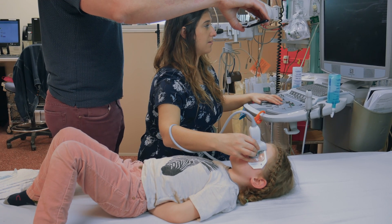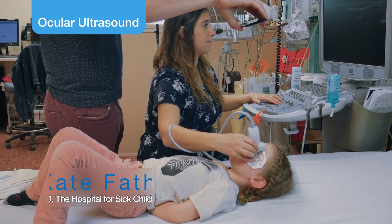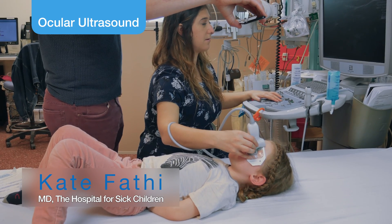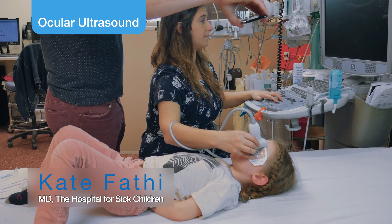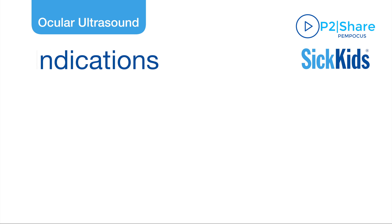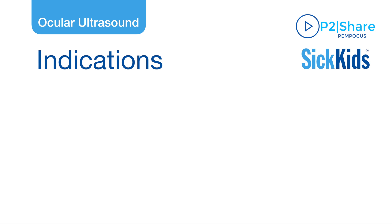This video will discuss an approach to performing a point-of-care ultrasound ocular exam in the pediatric patient. There are a multitude of reasons to perform a pediatric ocular POCUS exam. The most common is to assess for papilledema, such as in a child with headache or in a child with a VP shunt.